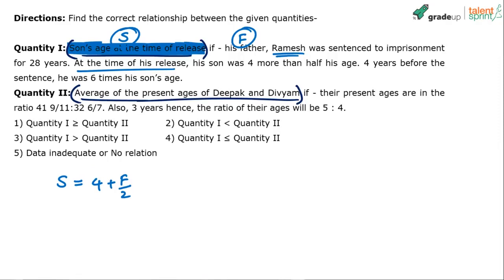We have considered the ages at the time of release to be S and F respectively. If the ages at the time of release are S and F, what were the ages when he was sentenced to jail? He was sentenced for 28 years, so on the day of release ages are S and F, meaning when the father was sent to jail the ages were S-28 and F-28 respectively — exactly 28 years ago.